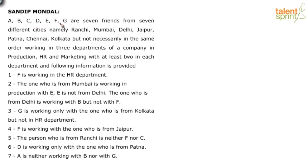A, B, C, D, E, F, G are 7 friends from 7 different cities — namely Ranchi, Mumbai, Delhi, Jaipur, Patna, Chennai, Kolkata — but not necessarily in the same order. They are working in 3 departments of a company: production, HR, and marketing, with at least 2 in each department. The following information is provided.